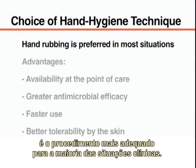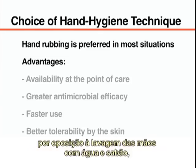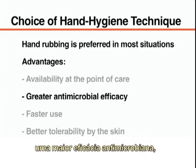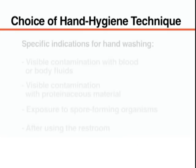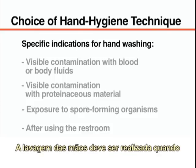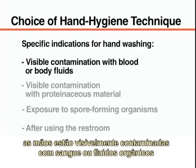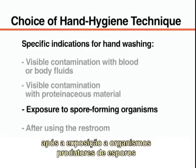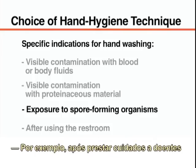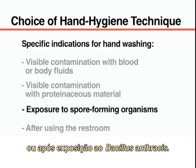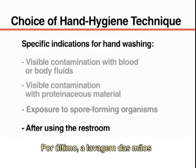Hand rubbing with an alcohol-based formulation is the preferred hand cleansing procedure in most clinical situations. The main advantages over soap and water include availability at the point of care, greater antimicrobial efficacy, faster use, and better tolerability by the skin. There are a few specific indications for which hand washing should be performed instead of hand rubbing: when the hands are visibly contaminated with blood, body fluids, or proteinaceous material; after exposure to spore-forming organisms such as Clostridium difficile or Bacillus anthracis; and after using the restroom.